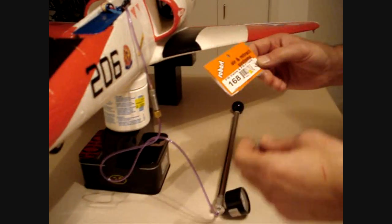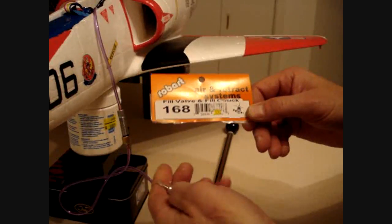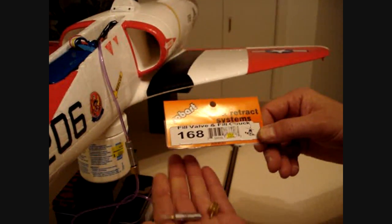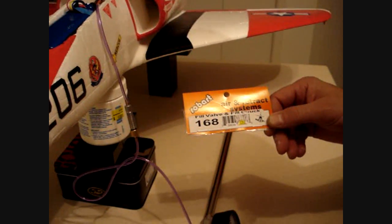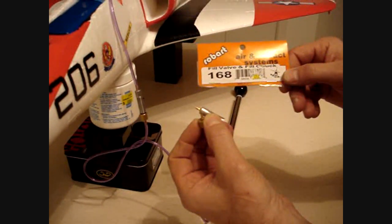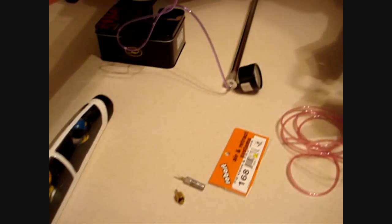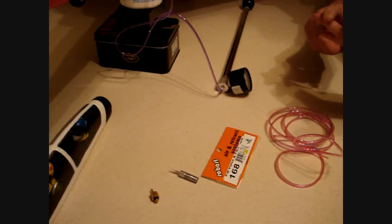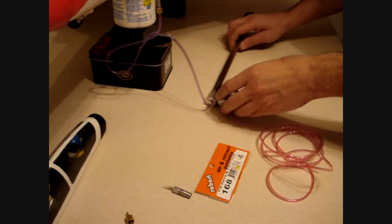You can get, this is the part number right here of the fill valve and the fill chuck that I have. They just screw in together like this. If you're going to run air retracts, this is the best way to do it. You're not lugging around a big tank or a big air compressor or anything like that.